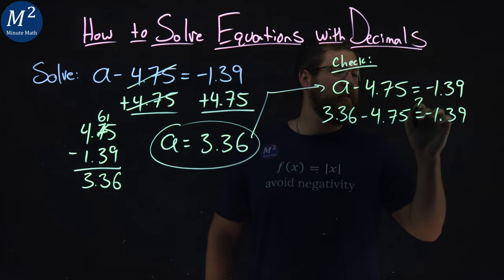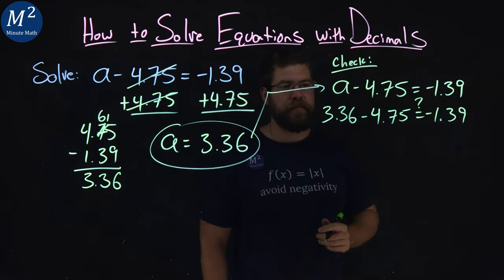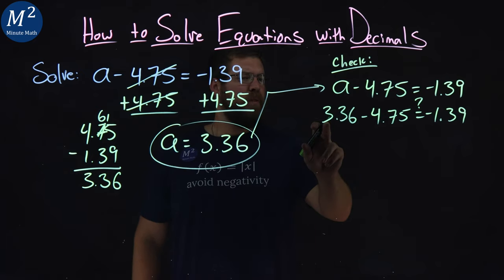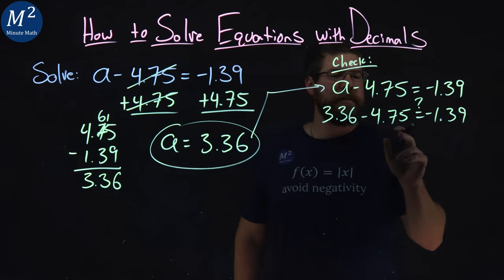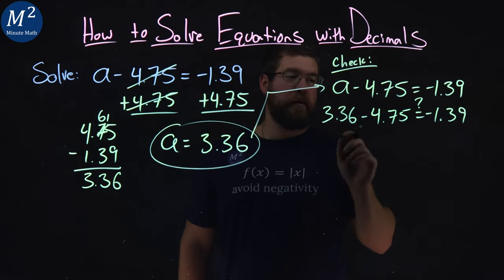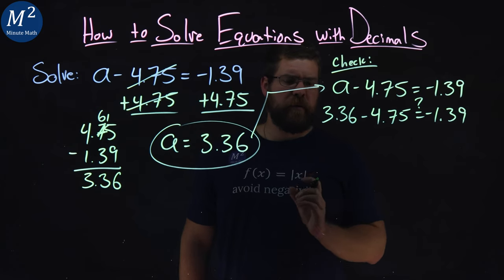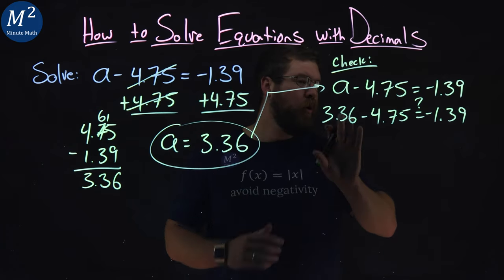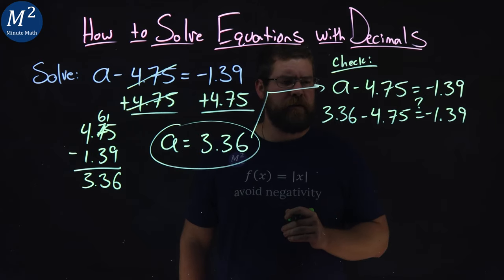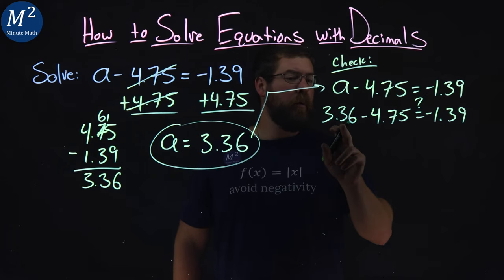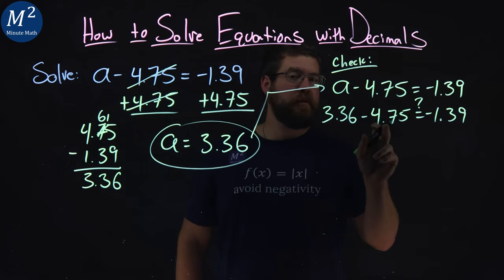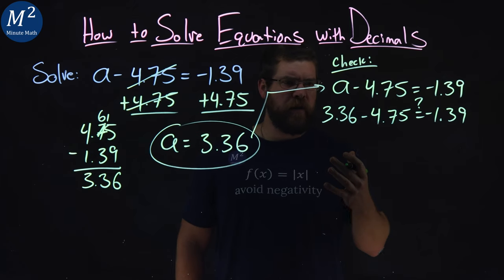We're going to see if the left and right-hand side are equal. Now, again, 3.36 and 4.75. We're subtracting the 4.75, and that's a larger number. So, when we have that happening, we know our answer is going to be negative on the left-hand side. So, really, what we want to do is find a difference between these two numbers, and then put a negative on it,